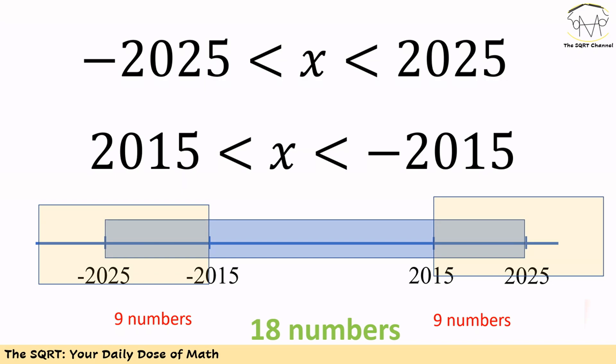Now we have two equations. The first one is x is greater than -2025 and less than 2025.